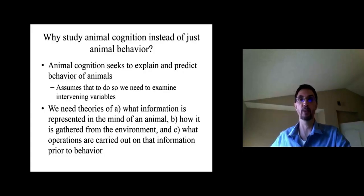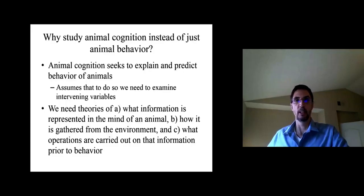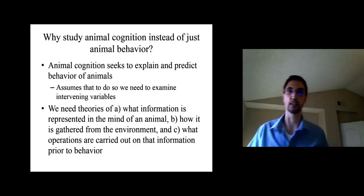So we need theories of what information is represented in the mind of an animal, so what's it holding inside. How did it gather this information from the environment, how did it perceive it and detect it? And finally, what operations it carries out on this information before producing a behavior. So all the stuff that cognitive psychologists talk about.